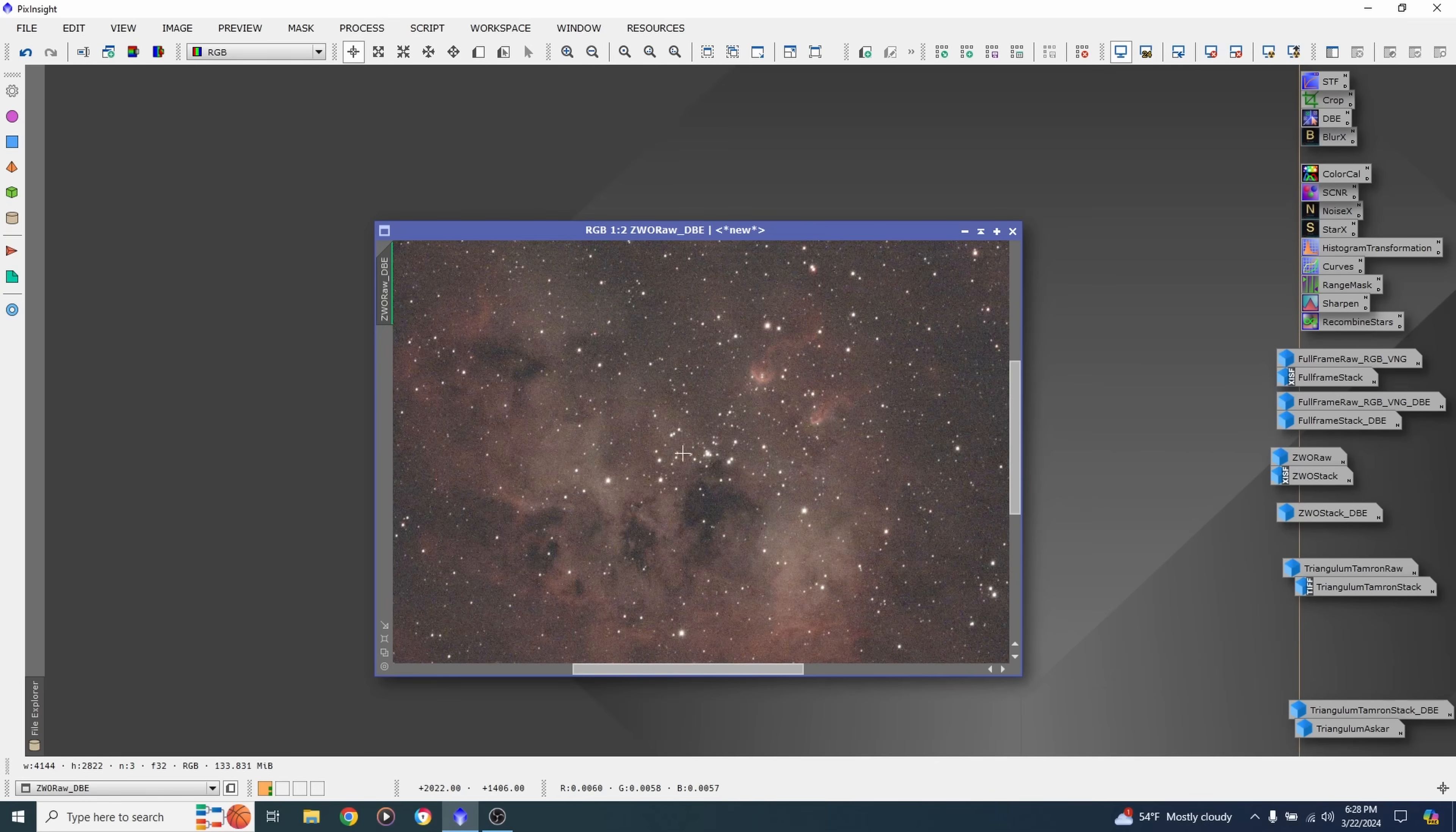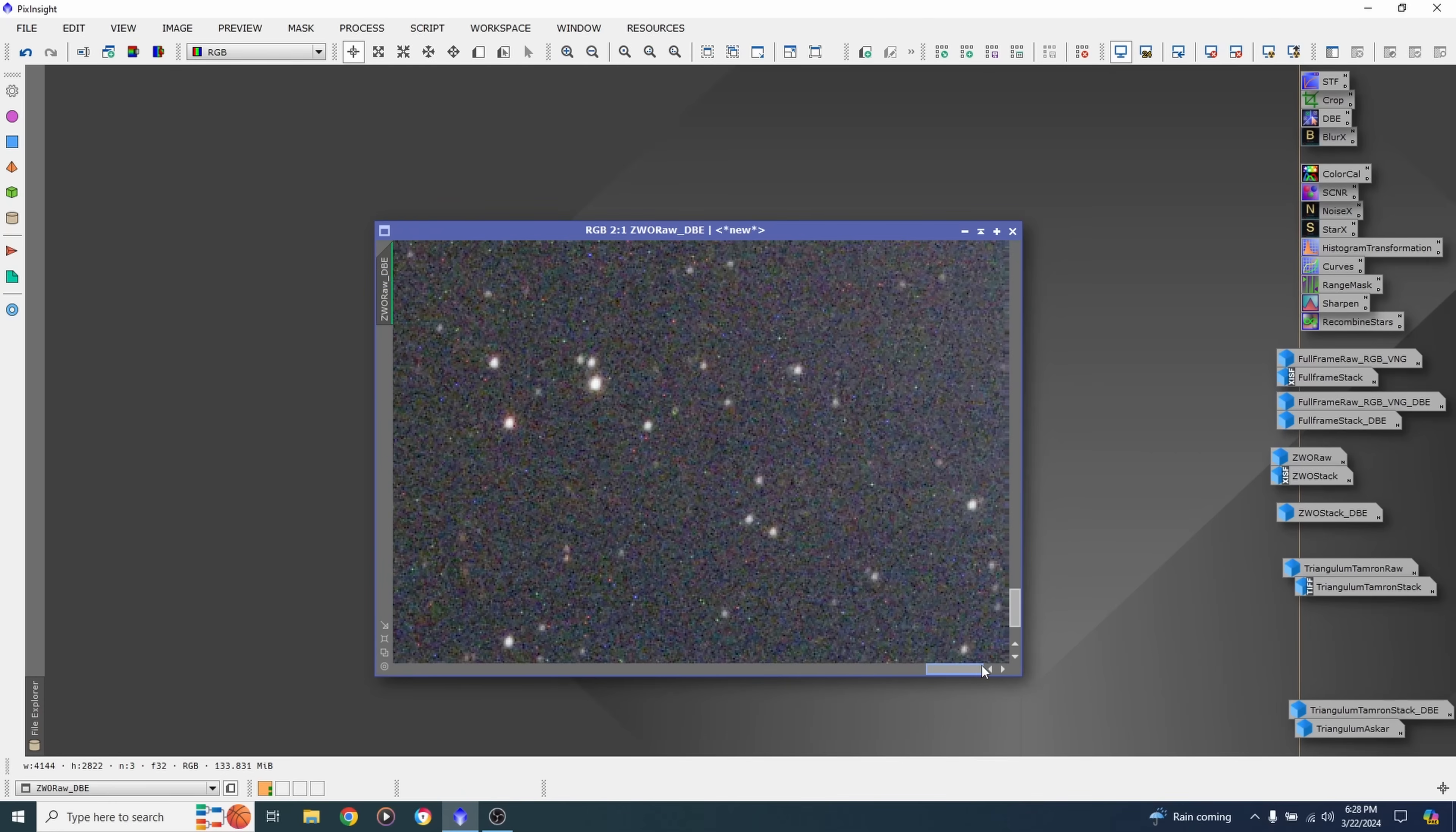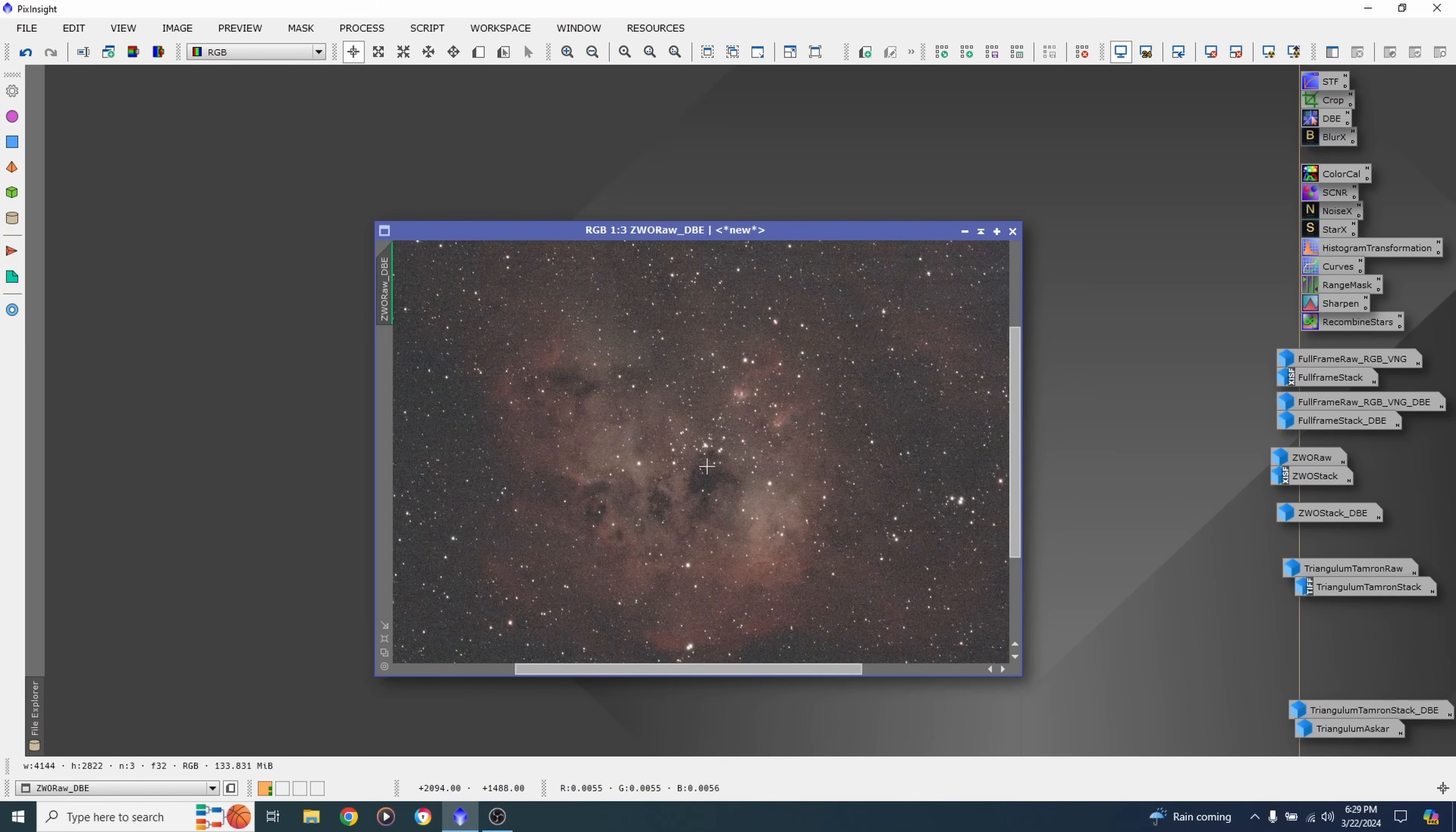Looks really good in the middle. Let's go down to the corner. And it's still looking pretty good in the corner. Maybe not quite perfect. This star looks maybe slightly weird, but you know, that could be atmospheric turbulence for all I know. I'm definitely not seeing any really elongated stars or comet tails at all in this image. I'm looking at all the corners and they all look pretty much the same. There's just not much difference between the center and the corner in this image.